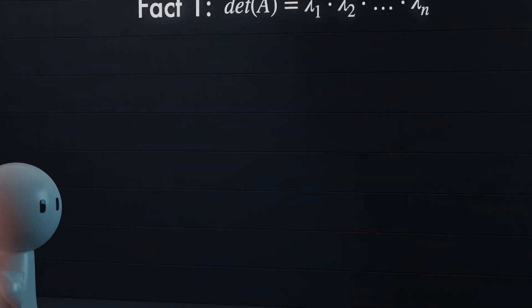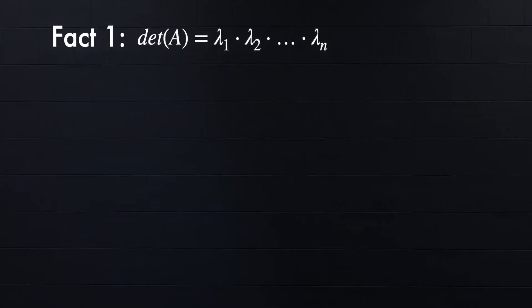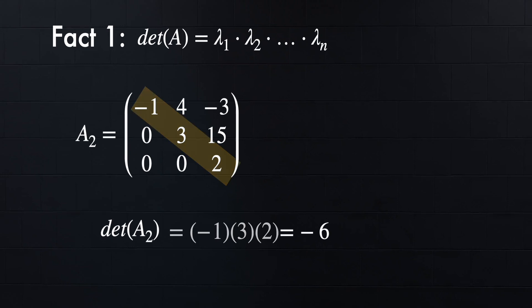Now, why does this work? While we won't be going over proofs in this video, we will go over some intuitive ways to think about these. If you think back to taking determinants, you'll remember that one other way to find determinants is to reduce your matrix to echelon form and then multiply the diagonals.